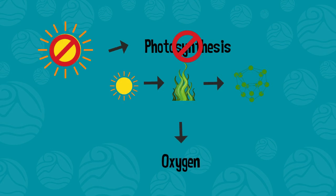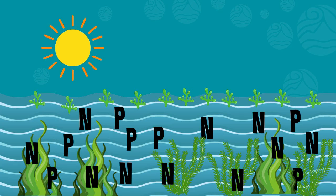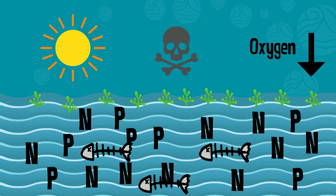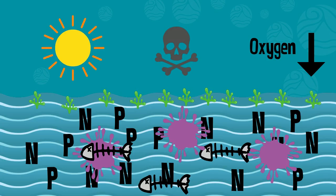Oxygen is the end product of photosynthesis, so this blockage limits the amount of oxygen produced by plants. Plants die because they can't photosynthesize, and other animals in the water are hurt by the lack of oxygen. Decomposers like bacteria use up even more oxygen when they break down dead plants and animals, further depleting oxygen levels.